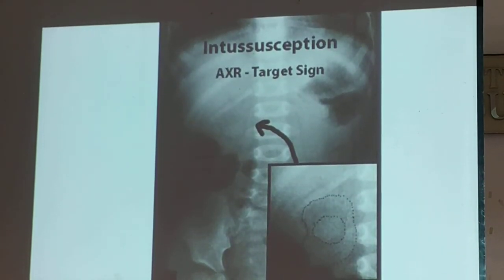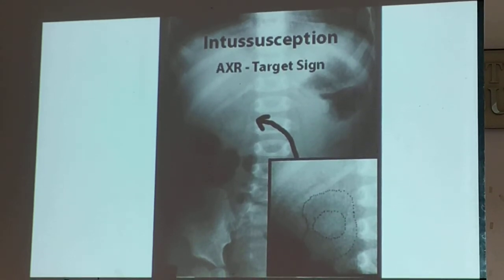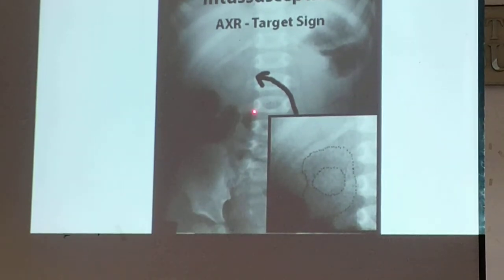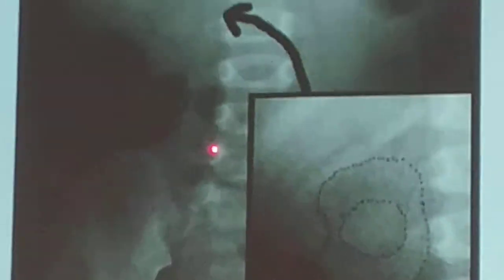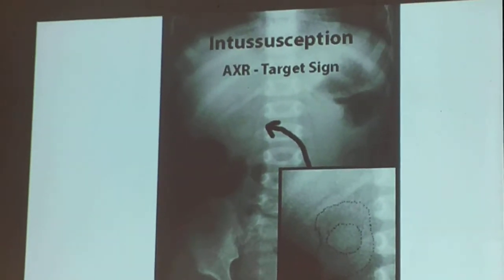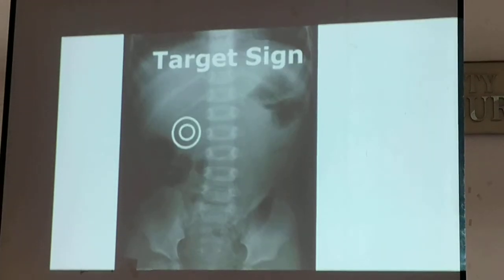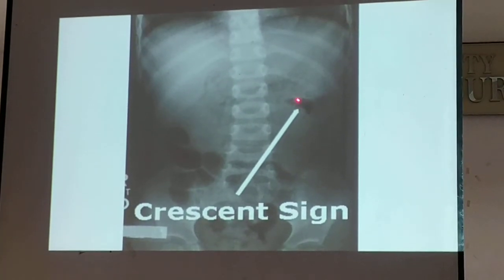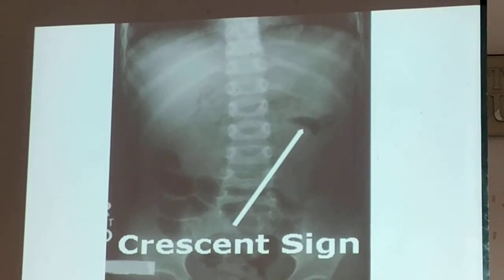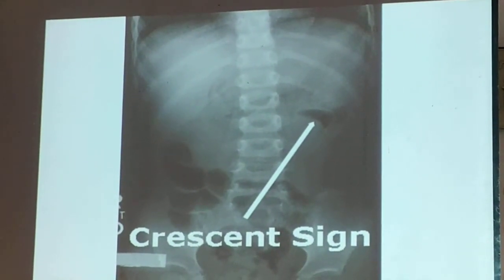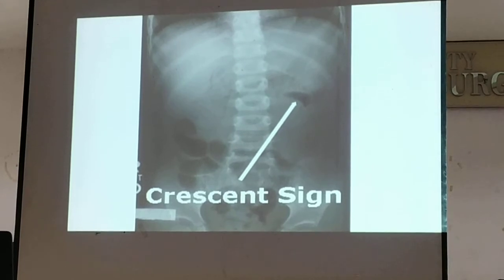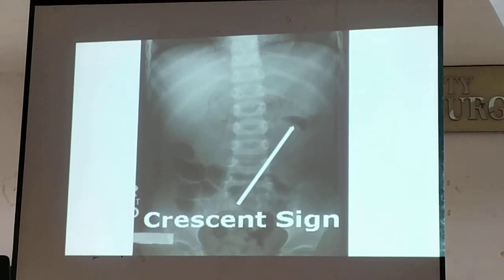In intussusception, there would be two signs. The first is the target sign — this is rarely appreciated; even the best radiologists can miss it. The more prominent sign is the crescent sign — it looks just like a crescent moon. Radiographically, the more appreciable one would be the crescent sign for intussusception.